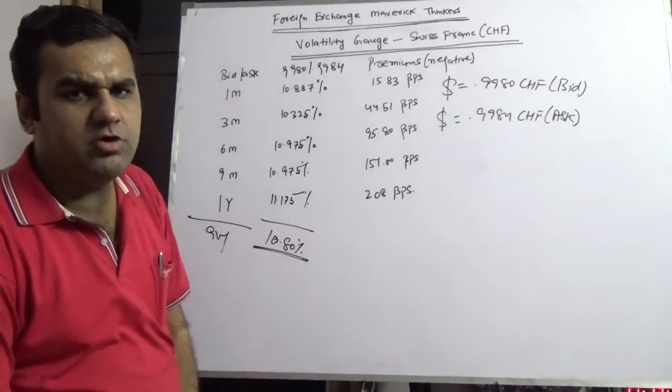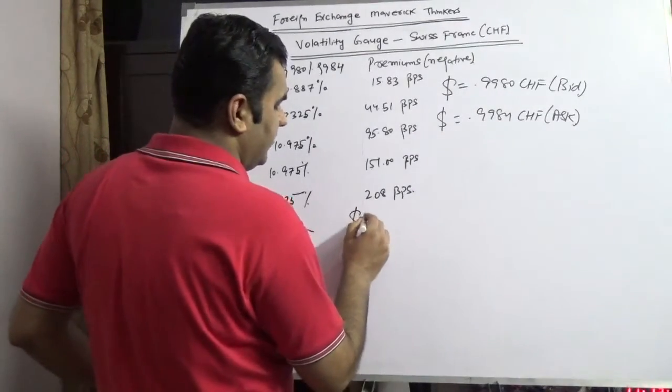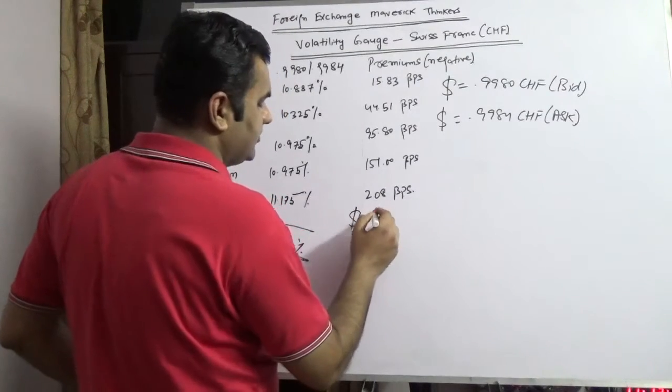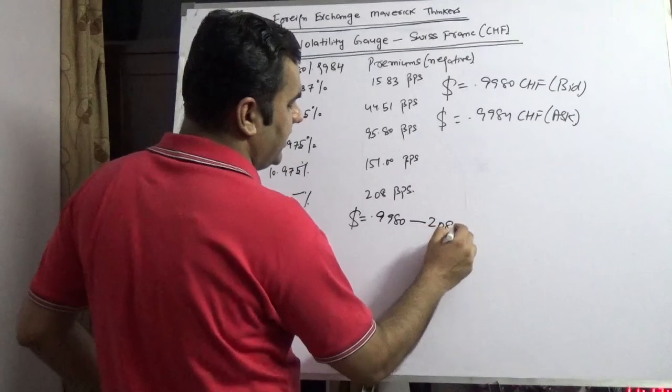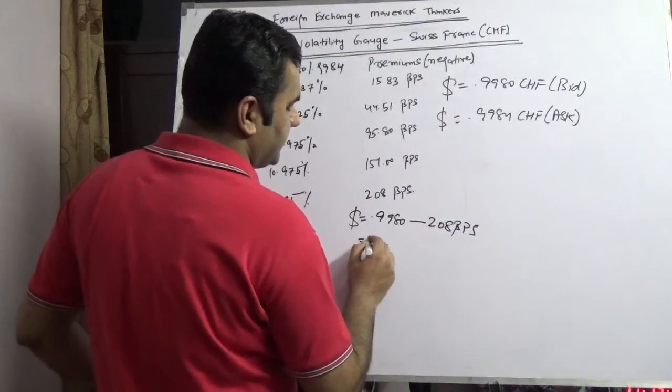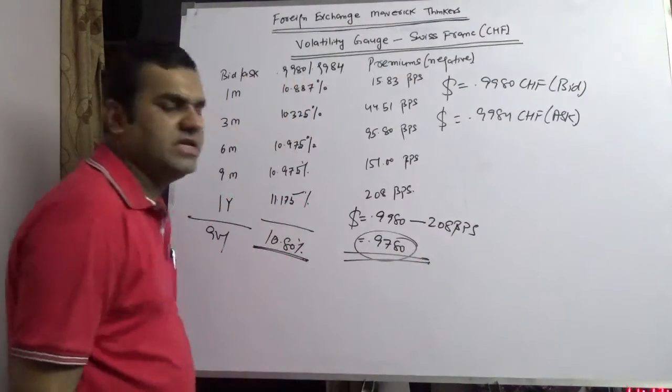So if today I want to sell one dollar against Swiss franc, I will get the rate of 0.9980 minus 208 basis points, which is approximately 0.9780. So the time value of money is negative.